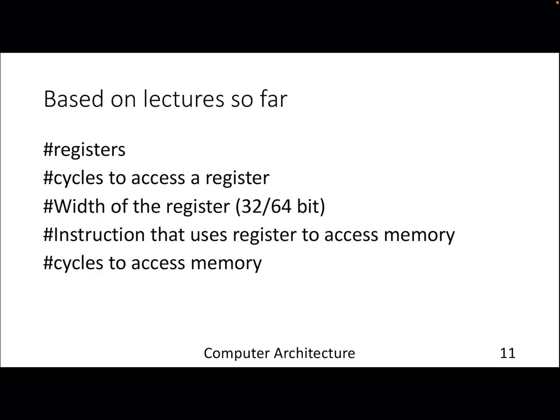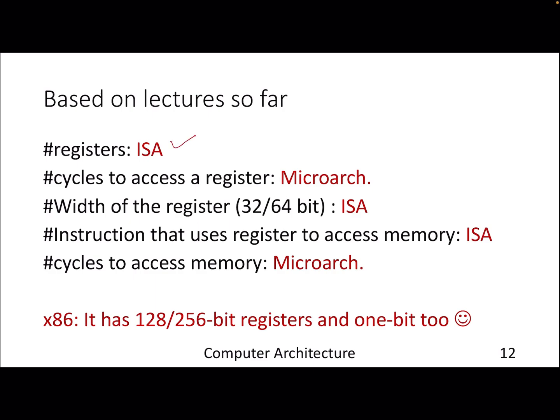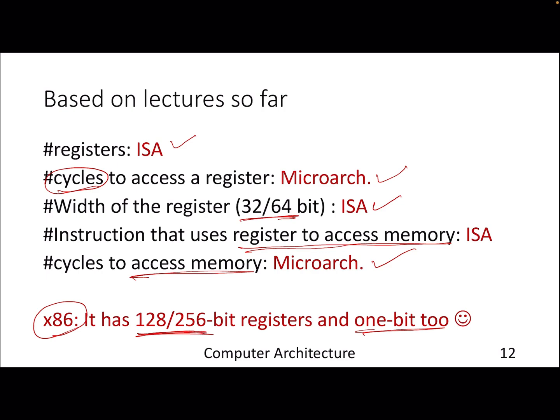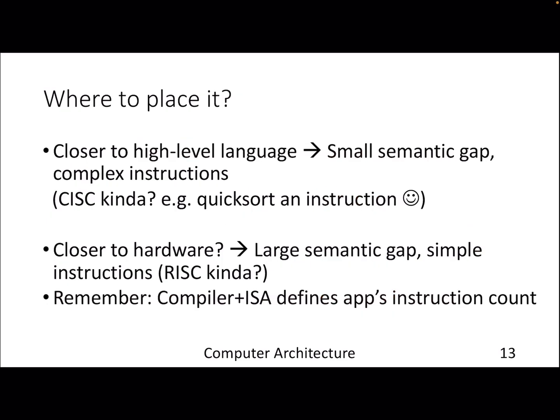Based on the lectures so far, consider whether specific knobs are part of ISA or microarchitecture. The number of registers is ISA, but the number of cycles to access a register is microarchitecture because it depends on implementation. The width of a register is ISA — you can have 32-bit, 64-bit, 128-bit, or 256-bit registers as in x86, or even one-bit. Whether an instruction uses registers to access memory is ISA — some ISAs allow it, some don't. Cycles to access memory is straightforwardly microarchitecture. Anywhere there are specific specifications, that falls in the ISA bucket.